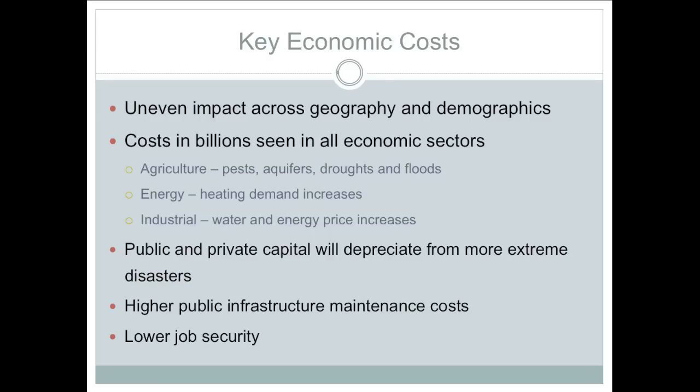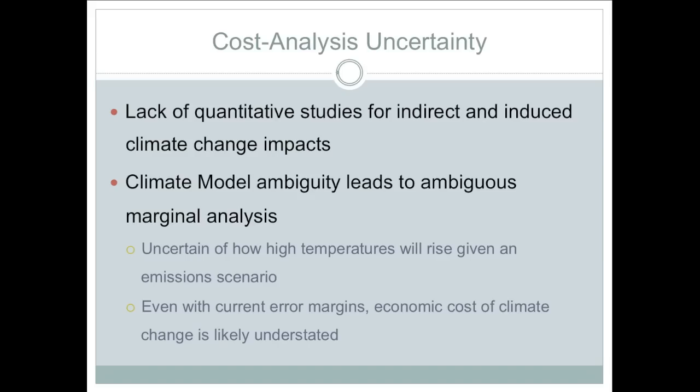Climate change will affect the United States unevenly across regions and demographics. The socioeconomically under-equipped will suffer more due to less access to resilient infrastructure and fewer options to adapt to the instability caused by rapid change, and different state resources will result in different sectoral impacts. For the government, there will be less tax revenue and higher public infrastructure maintenance costs due to faster capital depreciation. The economic effect of climate change continues to be underestimated due to the lack of quantitative studies on indirect and induced effects. Most cost predictions focus on direct costs and are conservative, but billions in damage to a majority of economic sectors is likely.